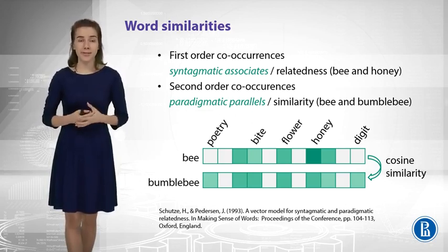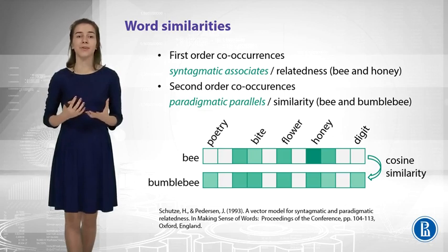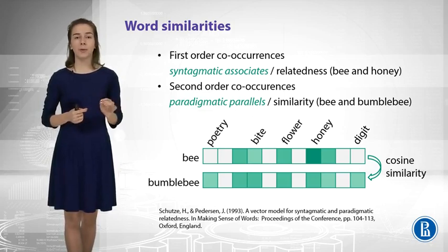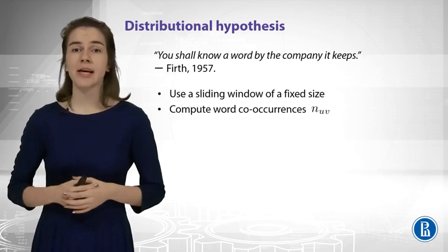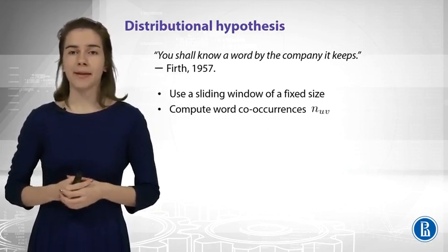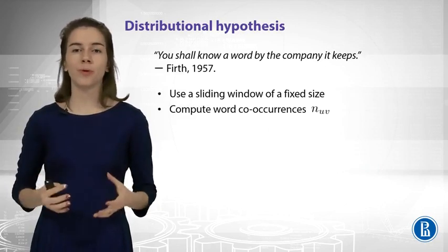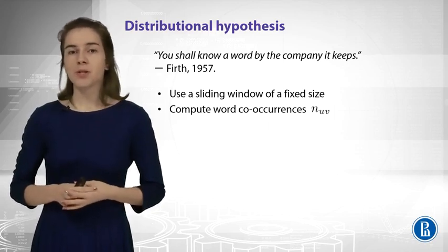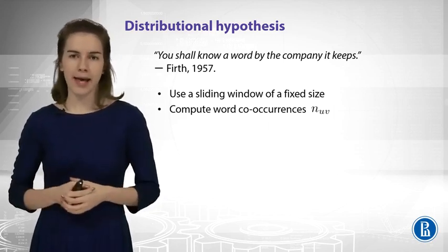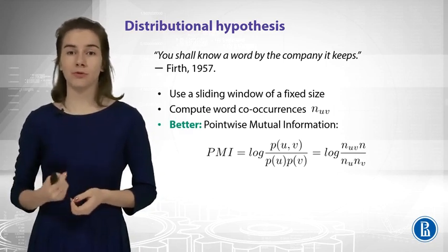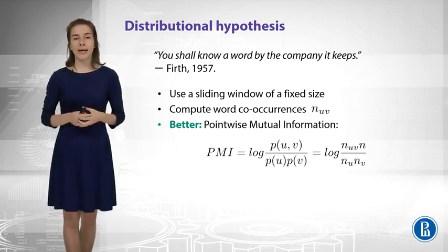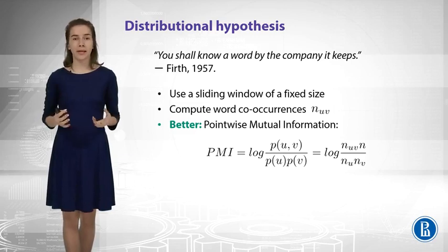These are usually called paradigmatic parallels, and this is the type of co-occurrence that we usually need. Now, let us get into a little more detail on how to compute those green counts. You can compute just word co-occurrences, but they can be biased because of two popular words in the vocabulary, like stop words, giving rather noisy estimates. You need somehow to penalize very popular words. One way to do this would be point-wise mutual information, or PMI. It says that you should put the individual counts of the words in the denominator. This way, you will understand whether these two words co-occurred randomly or not.